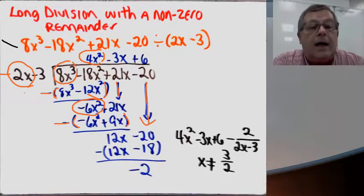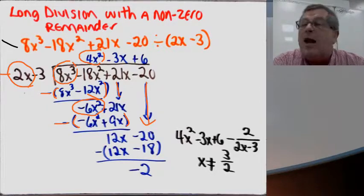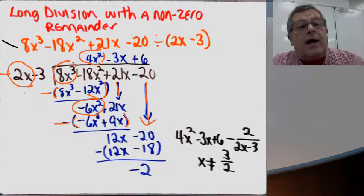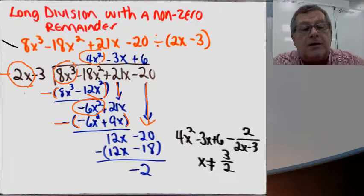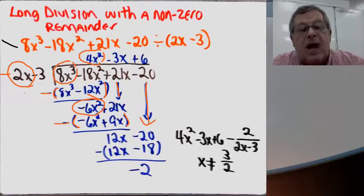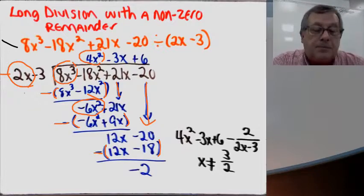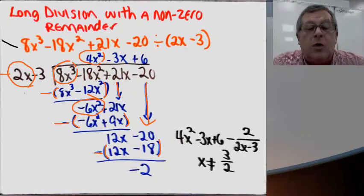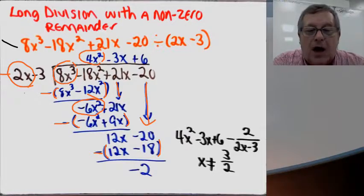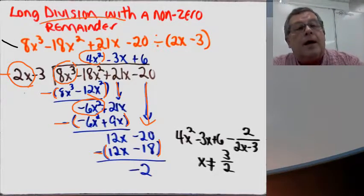I bring down the minus 20. How many times will 2x go into 12x? It'll go in 6 times. Six times 2x gives me 12x, and 6 times minus 3 gives me minus 18. I put those in parentheses with a minus sign out front. So 12x minus 12x is 0, and minus 20 plus 18 gives me minus 2. I have a remainder of minus 2.